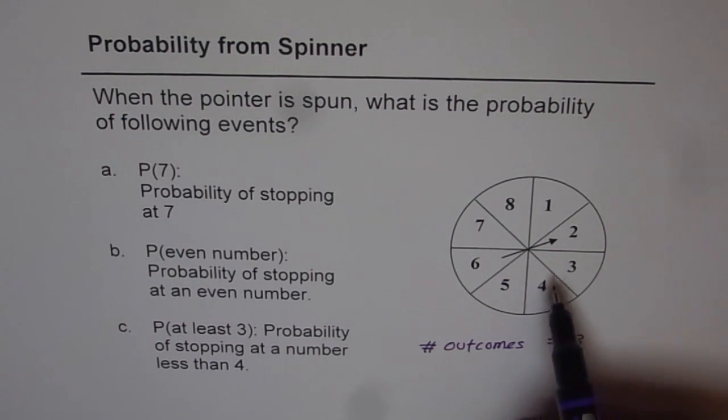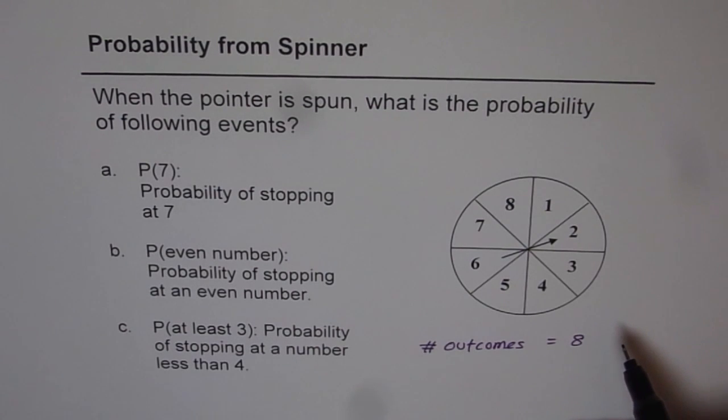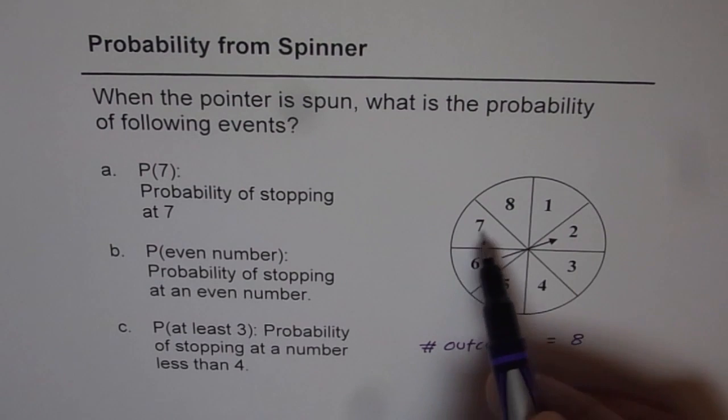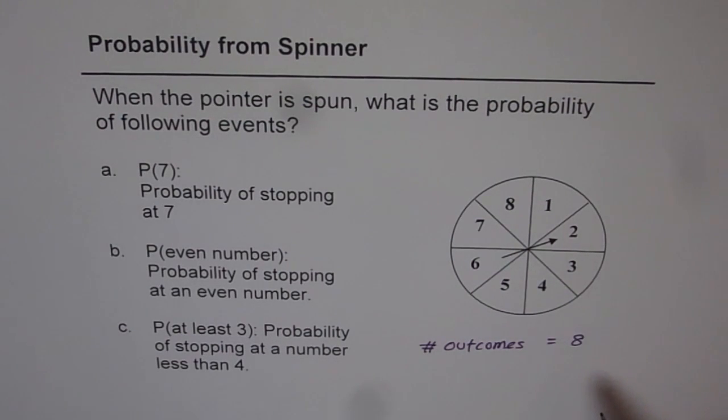So it could stop in 8 possible locations, and all are equally likely since each portion is an equal part.